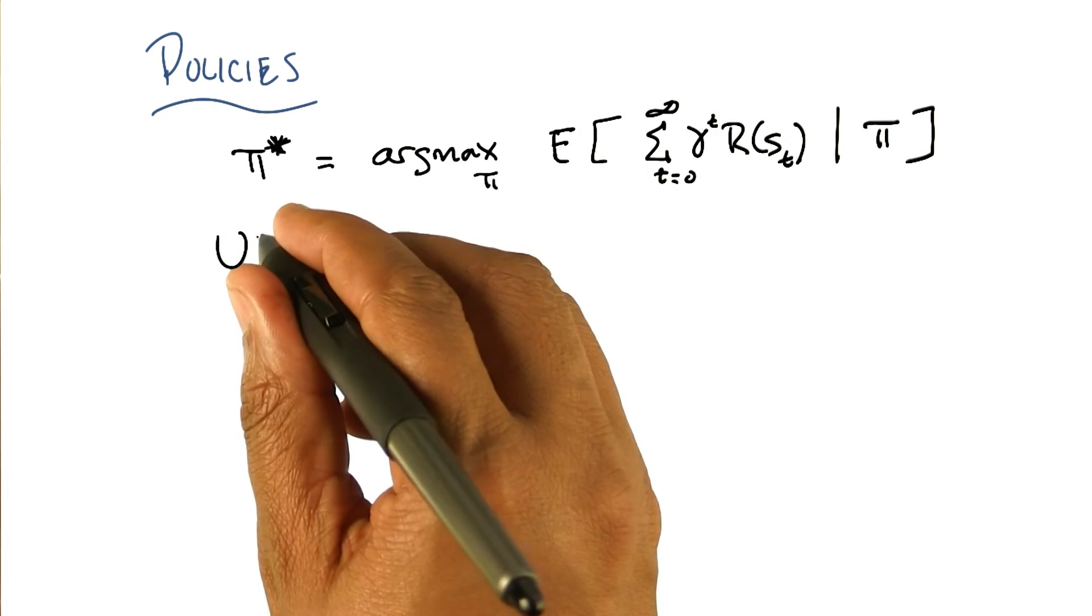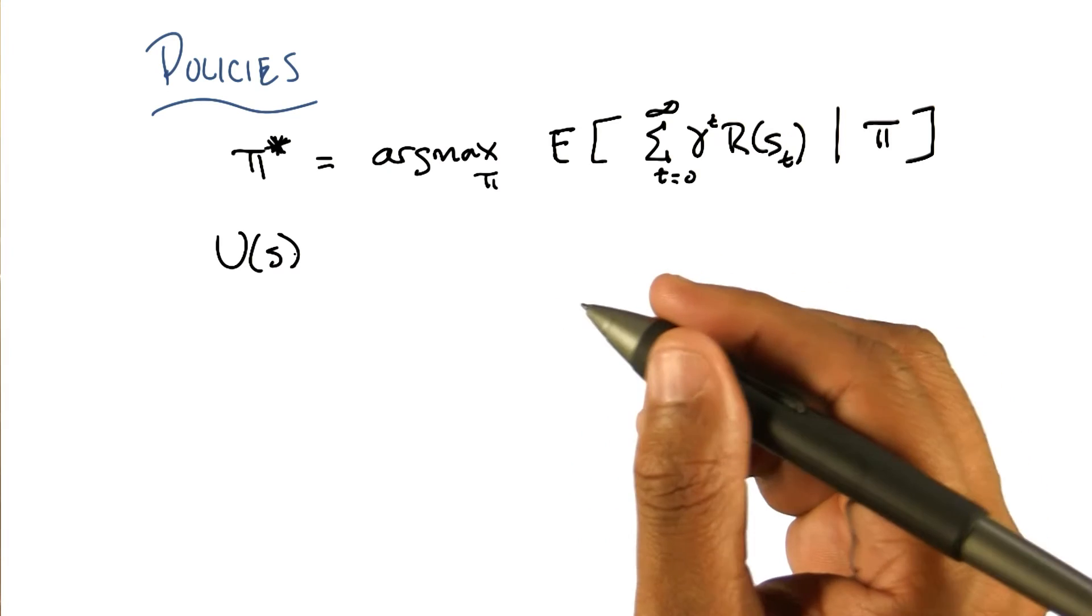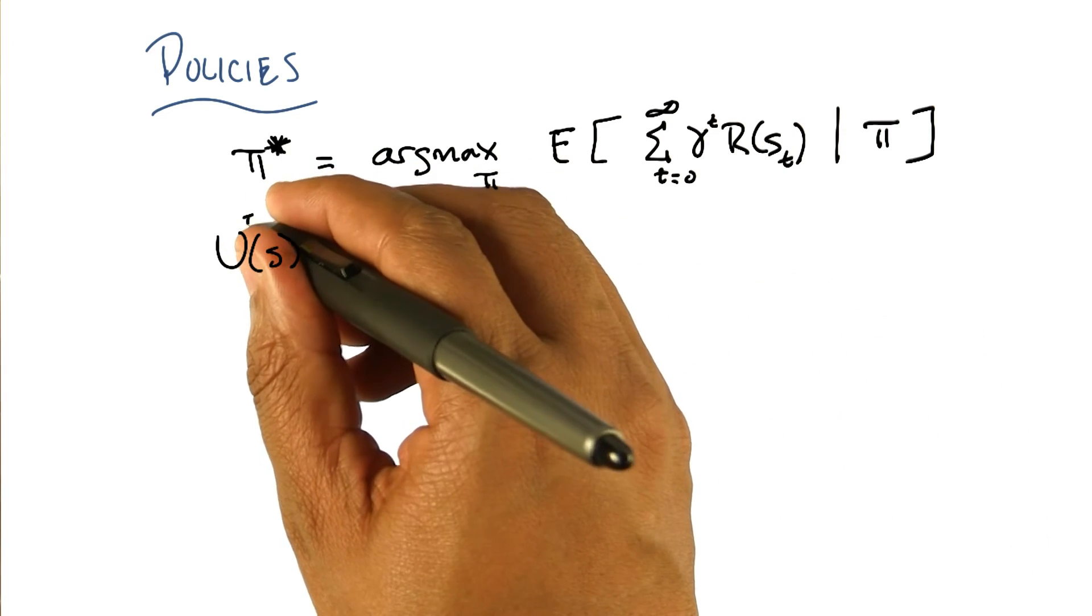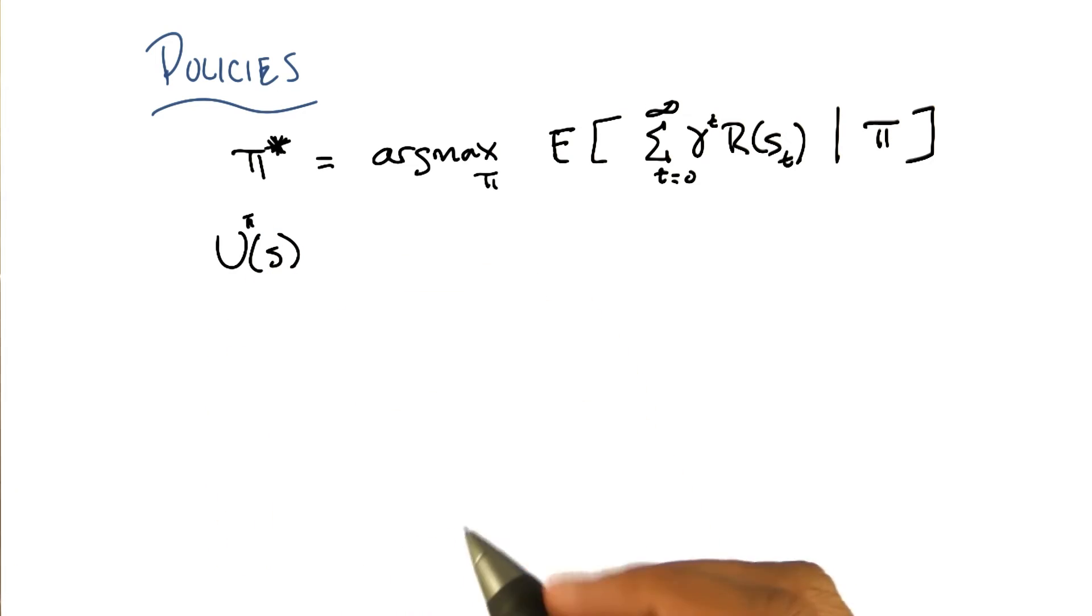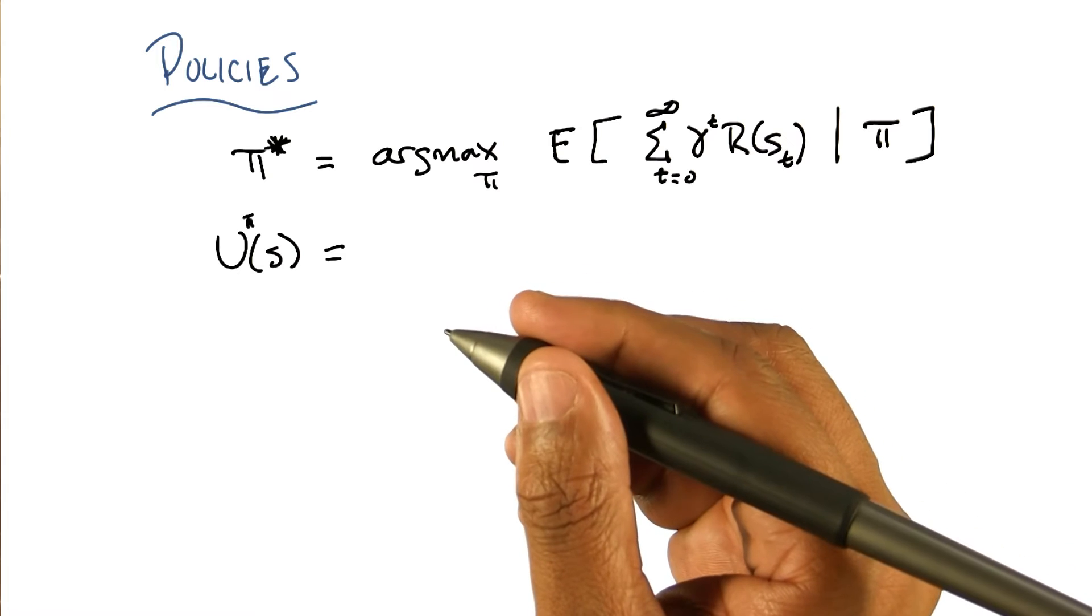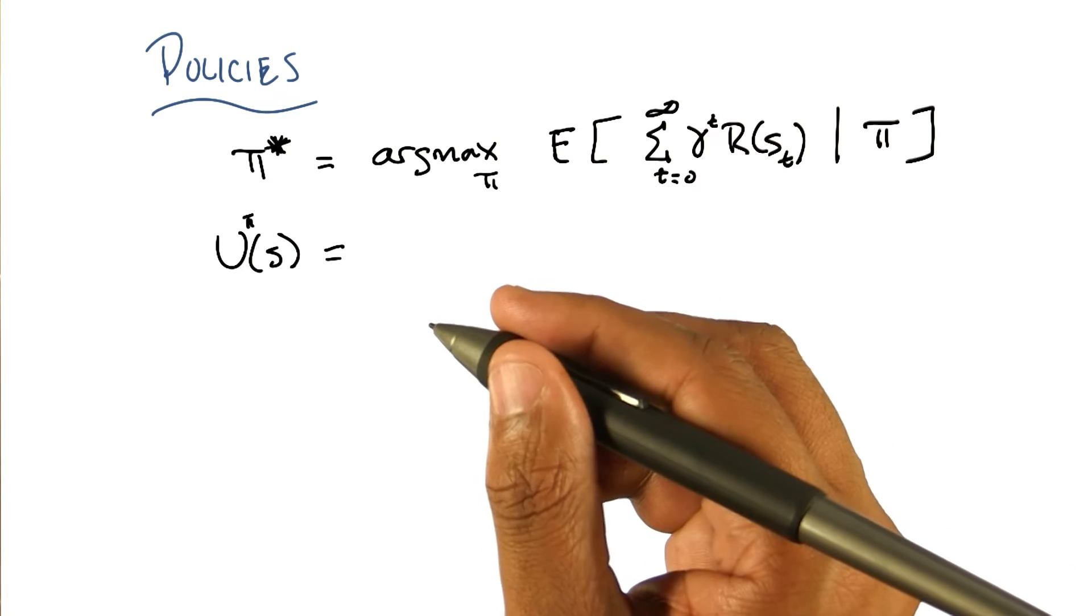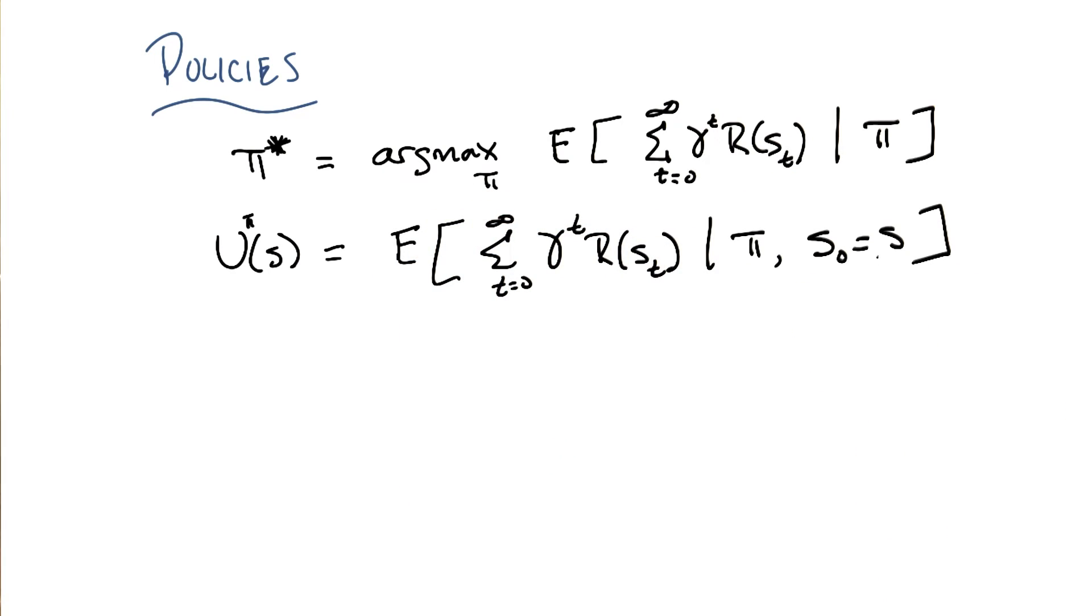I'm going to say that the utility of a particular sequence, of a particular state, okay? Well, it's going to depend upon the policy that we're following. So I'm going to rewrite the utility to take as a superscript π. And that's simply going to be the expected set of states that I'm going to see from that point on, given that I follow a policy. There, does that make sense?